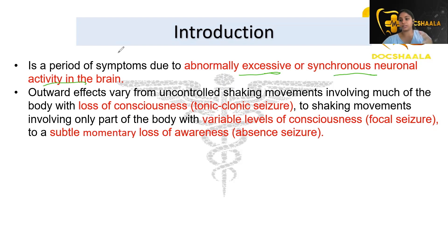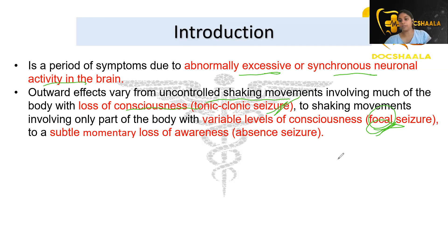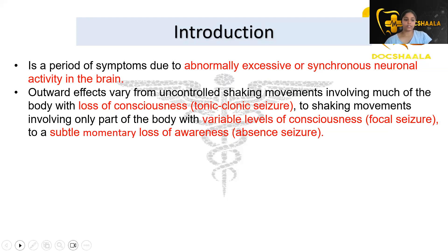The outward effects — things we can observe from the patient — include uncontrolled shaking movements involving much of the body with loss of consciousness, seen in tonic-clonic seizures; shaking movements involving only one part of the body with a variable level of consciousness, seen in focal seizures; and a subtle momentary loss of awareness — where the patient is conscious but only has subtle momentary loss of awareness — seen in absence seizures.